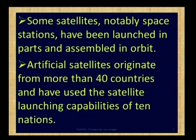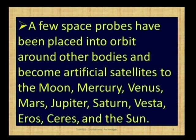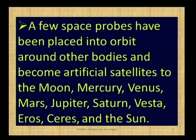More than 40 countries have made satellite launch vehicles and satellites to gather information, and 10 countries have used satellite launching capabilities. A few space probes have been placed into orbit around other bodies and became artificial satellites to the Moon, Mercury, Venus, Mars, Jupiter, Saturn, Vesta, Eros, Ceres, and the Sun.